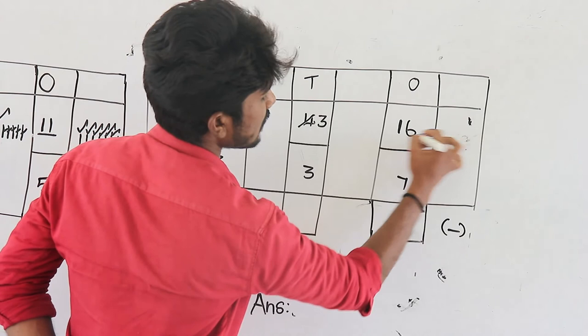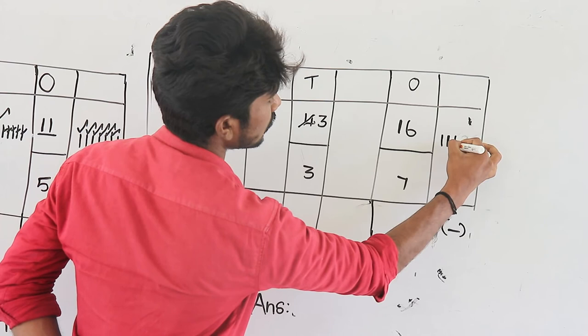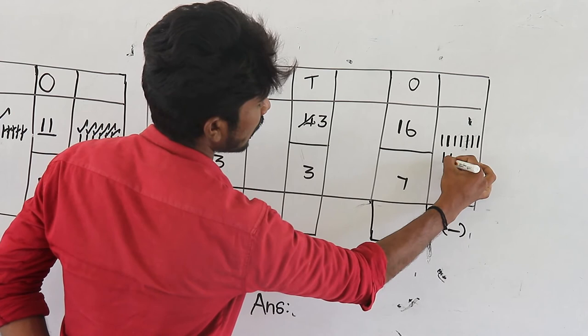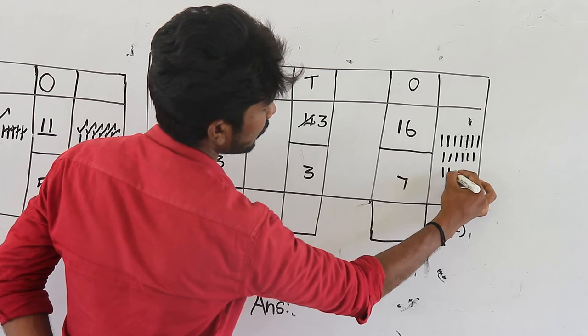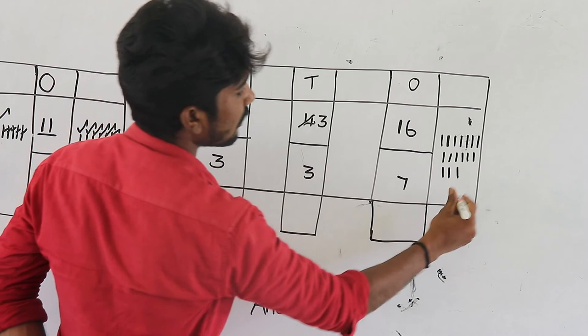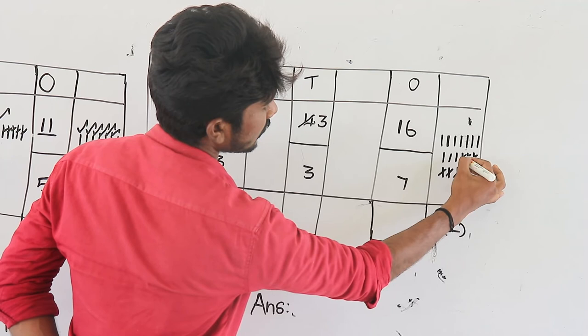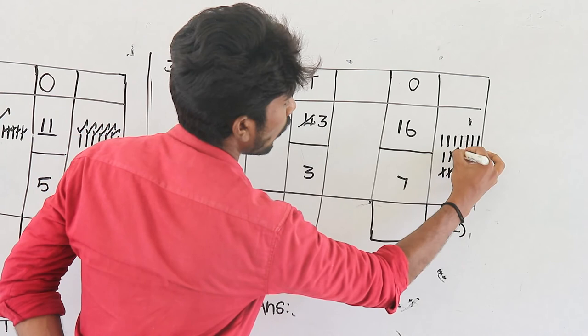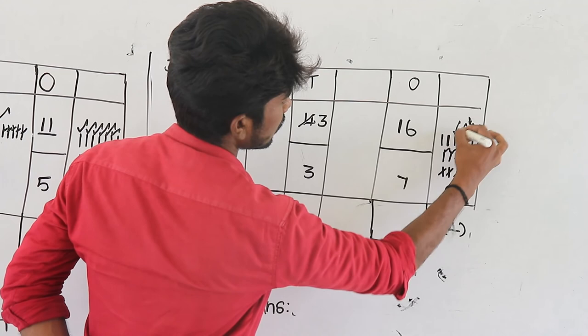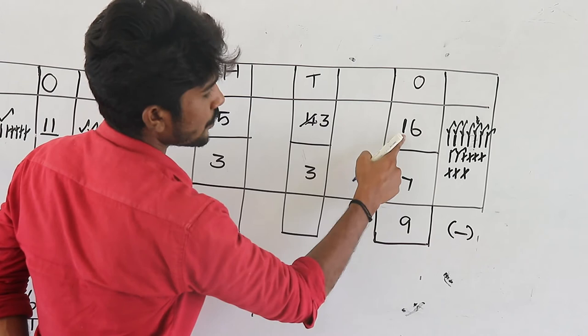Draw first number 16 lines: 1 through 16. Next, lower part value is 7, so cancel 7 lines: 1 through 7. Count remaining: 1 through 9. So write the answer here: 9. So 16 minus 7 is equal to 9. Ones value is finished.